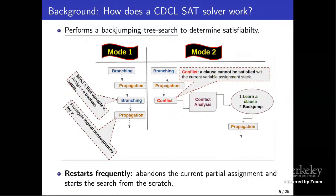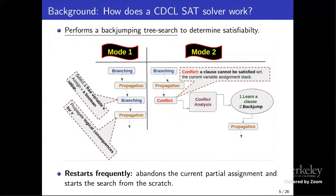Propagation is the propagation of the logical consequences of the decision the solver just made. In a CDCL solver, branching is followed by propagation, but in many cases during propagation a situation called conflict may occur. A conflict is a situation where a clause cannot be satisfied with respect to the current variable assignment stack. Once a conflict occurs, the CDCL solver calls a component called conflict analysis, which outputs a learned clause and a backjumping level.